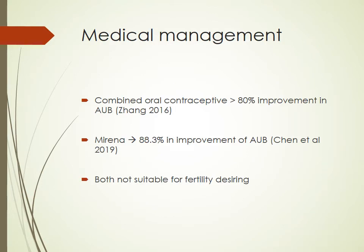For medical management, there is evidence to suggest combined oral contraceptives are associated with more than 80% improvement in abnormal uterine bleeding, according to Zeng in 2016. Mirena also addresses abnormal uterine bleeding and pain-related symptoms, with improvement in AUB of more than 88.3%, according to Chen et al. in 2019. Importantly, both of these modalities are not suitable for a patient who wishes to fall pregnant.